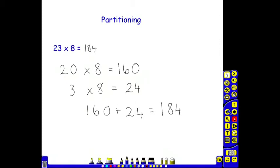They may also use a grid method in order to partition the 2 digit number. So the 20 is partitioned into 20 and 3. And then we are multiplying by 8. 20 multiplied by the 8 is 160. 3 multiplied by the 8 is 24. And the 2 answers when recombined and added together give an answer of 184. So that's the grid method they can use also.